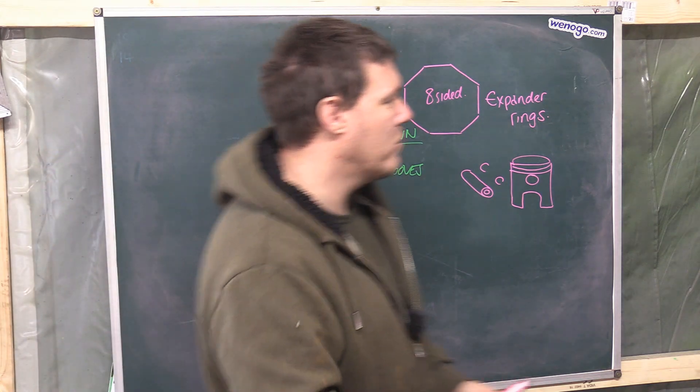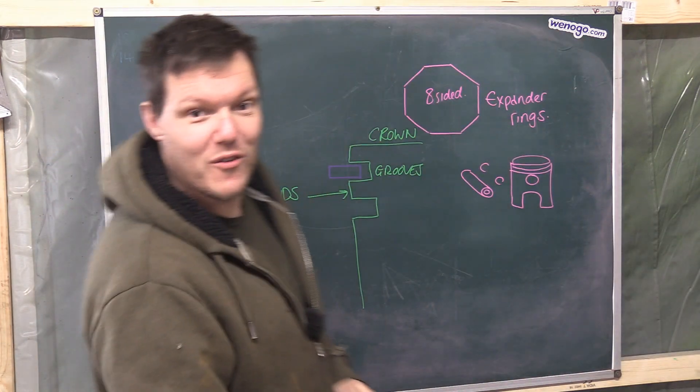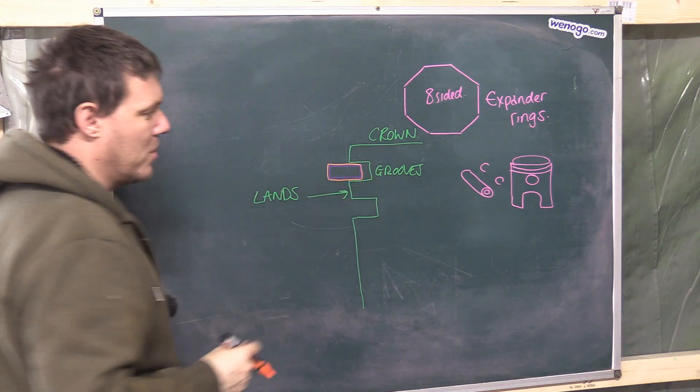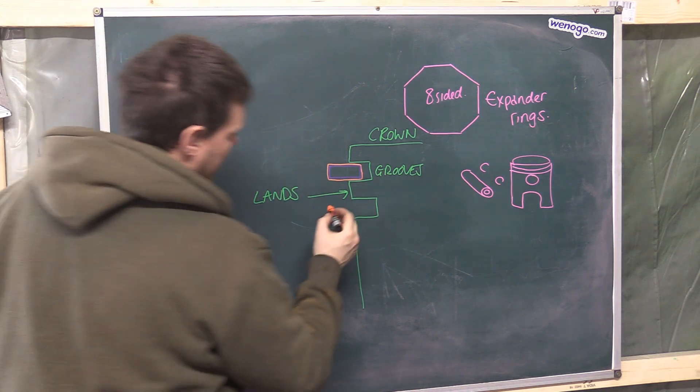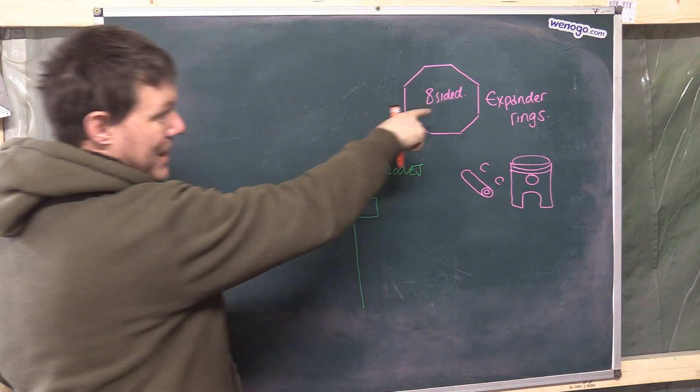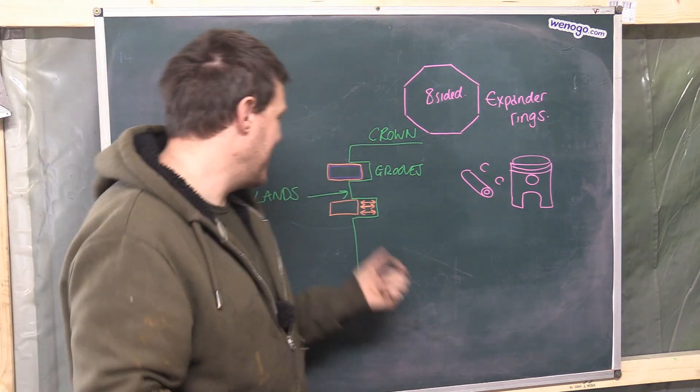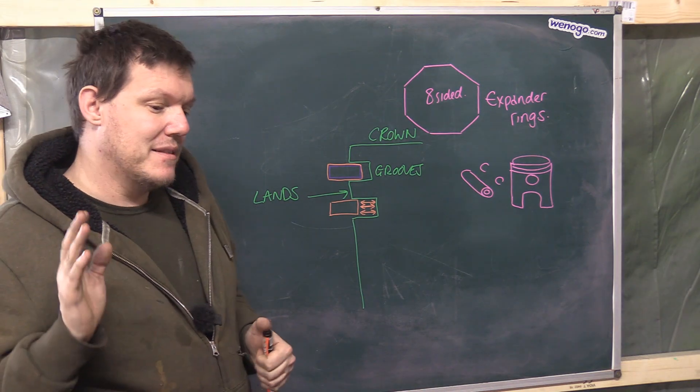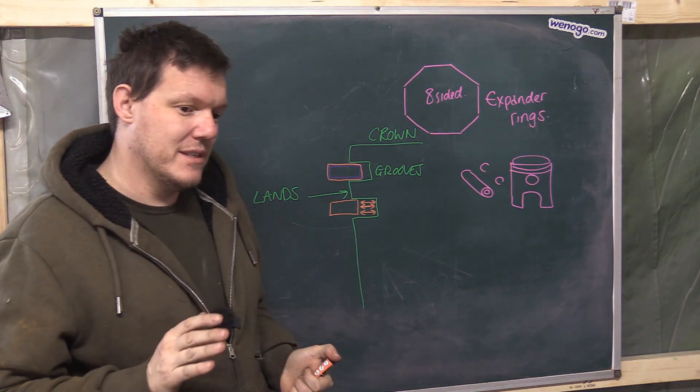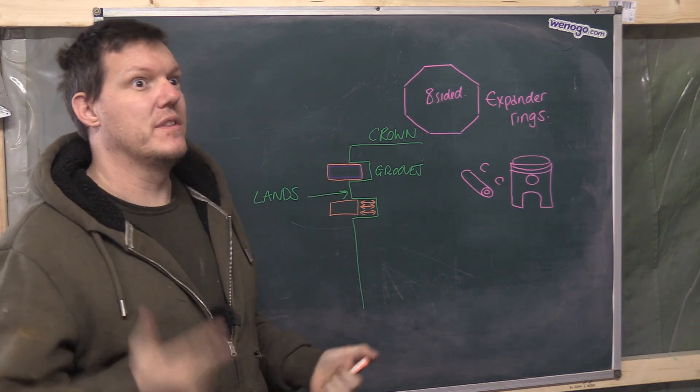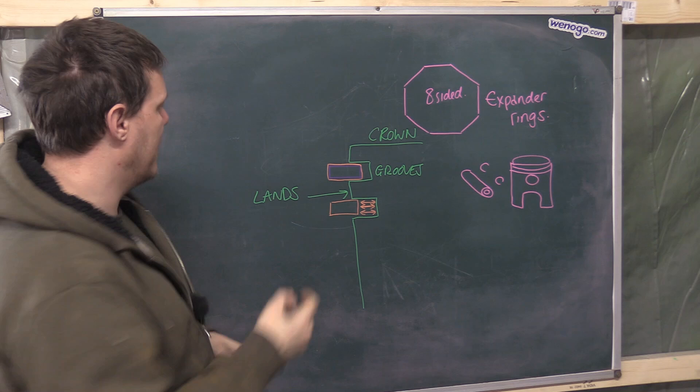And what you do is you fit a—that's a really bad color, that's probably not going to show up, let's go for orange. You'll have a top compression ring, and then you'll have a second ring. And that expander ring is meant to fit in here.